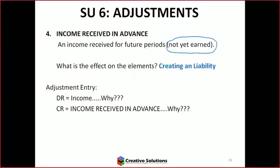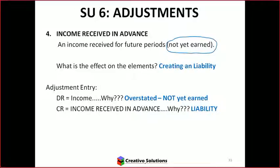Income received in advance is an amount you've received that isn't yours yet because it hasn't been earned. So how do we create liabilities? It's going to be on the credit side. Exactly — you've got the credit for the liability, and then we're debiting the income. Why? Because it's overstated — it hasn't been earned.